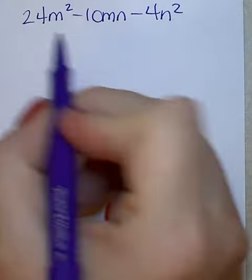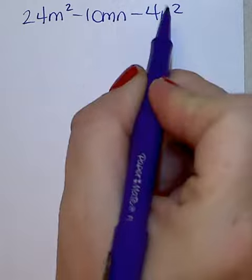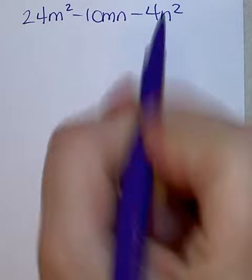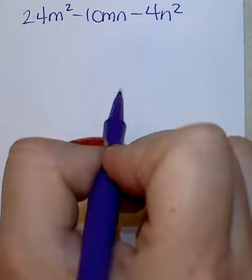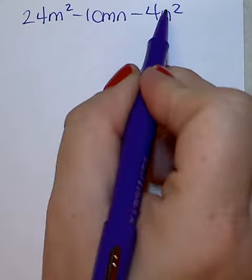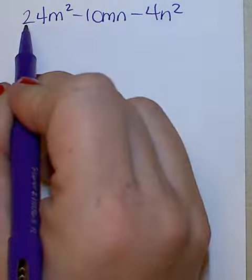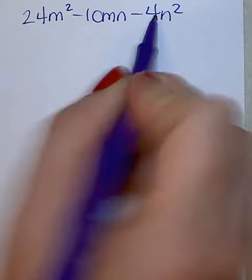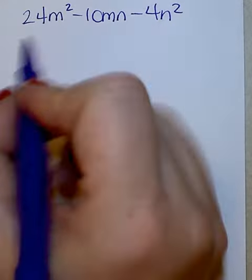Factor the expression. So first, is there a monomial that I can divide out of each term? They don't all contain m's or n's, but I can see they're all divisible by 2. They're not all divisible by 4, so I'm going to take out a 2.